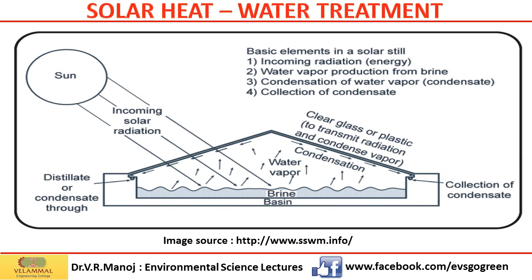Another interesting application of solar energy mimics the natural process of evaporation and condensation to produce distilled water in a solar still or solar distillation unit. Impure water containing salts can be evaporated using solar energy into water vapor. This water vapor is then condensed and collected as clean distillate, leaving the salts and other impurities behind.